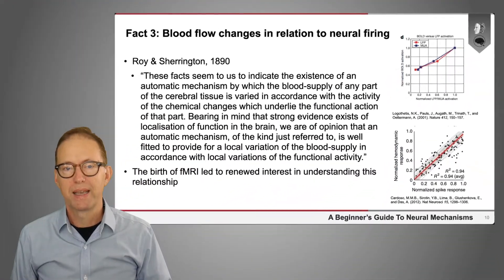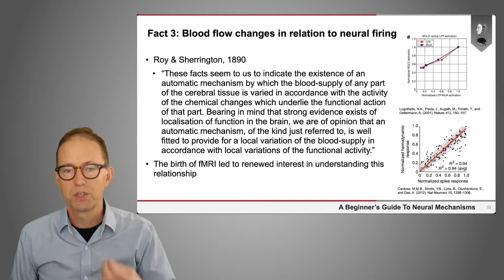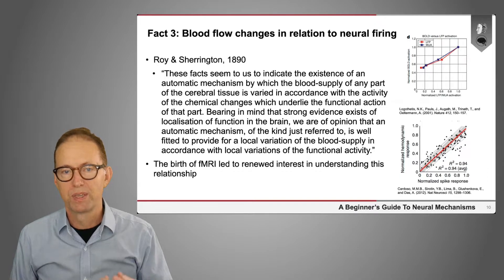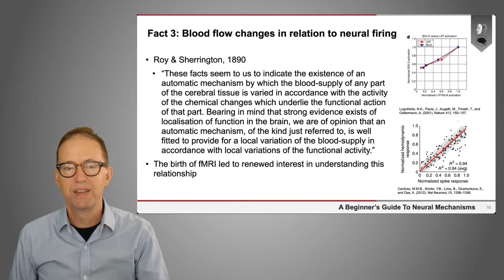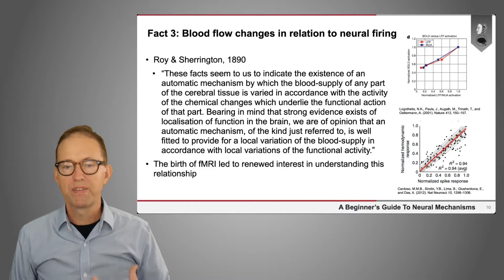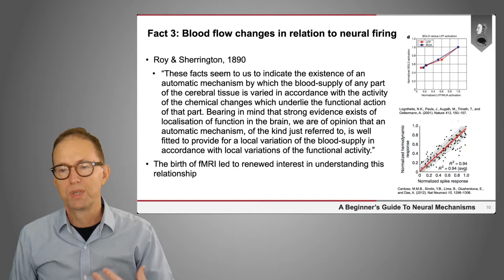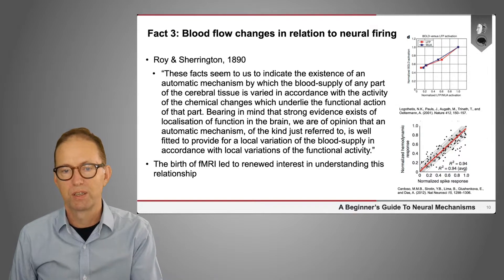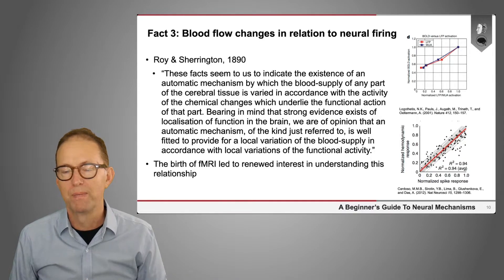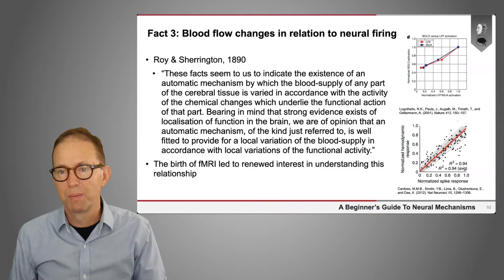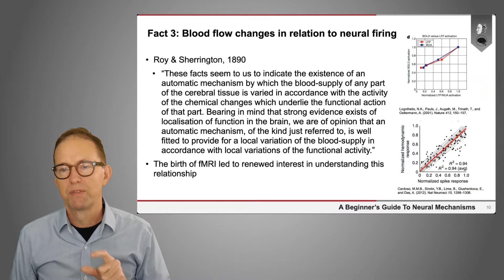A third key fact is that blood flow changes in relation to neural firing. This was known back in the 19th century from the work of Roy and Sherrington, who noted that blood supply varied in accordance with neuron activity. The birth of fMRI led to renewed interest in this relationship. We now know from simultaneous functional MRI and electrophysiological recordings, as well as functional MRI and optical imaging, that under some conditions there can be a very tight relationship between the level of spiking in neurons and the level of blood flow response.